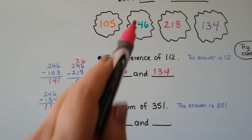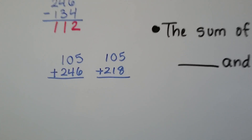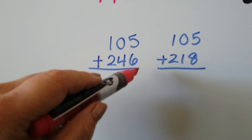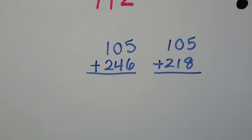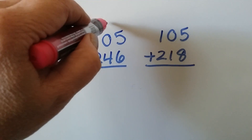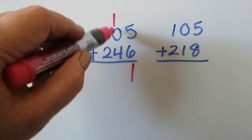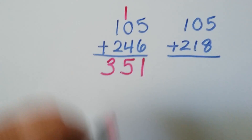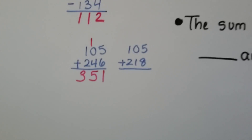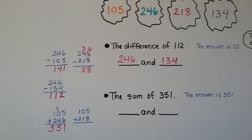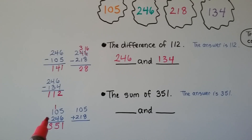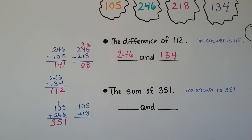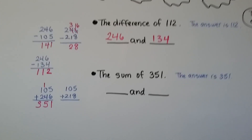Let's try 105 and 246, the first two numbers. Five plus six — well, five plus five is 10, so five plus six is 11. We regroup the one and put the one down. One plus zero plus four is five. And one plus two is three. Look at that — we got lucky. The very first two numbers we tried ended up being the right ones. It is 351.